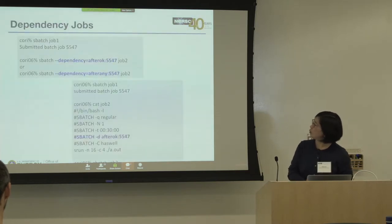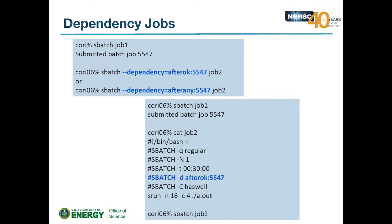For job dependencies, submit the first job and get its job ID, then submit the second job with '--dependency=afterok:<jobID>'. You can also put dependency directives in the sbatch script itself. This ensures your second job runs only after the first completes successfully.